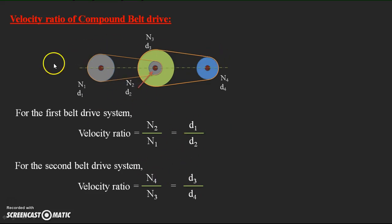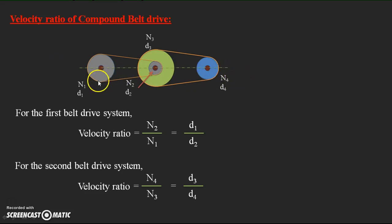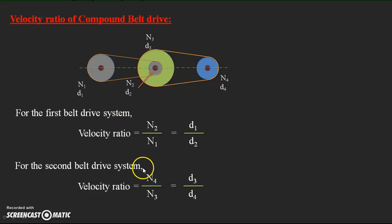To get the velocity ratio for the compound belt drive system, the ratio should be the final follower to the first driver, that is N4 by N1. To achieve this, we multiply the two equations: (N2 by N1) multiplied by (N4 by N3), equal to (D1 by D2) multiplied by (D3 by D4).